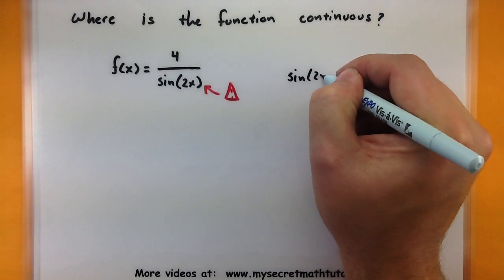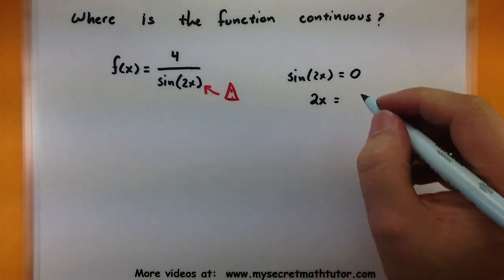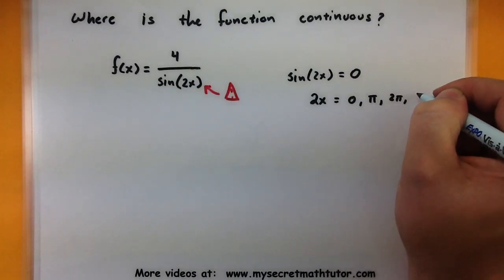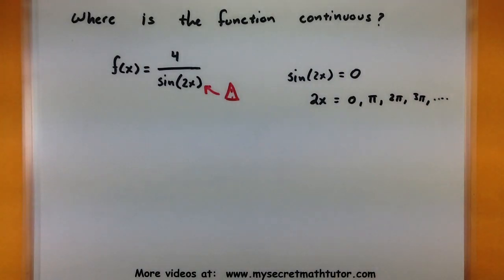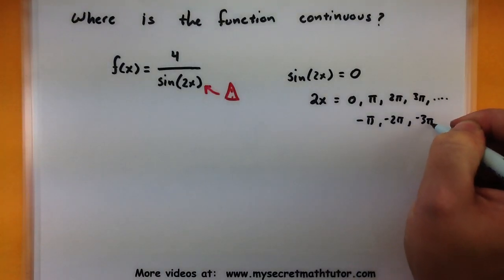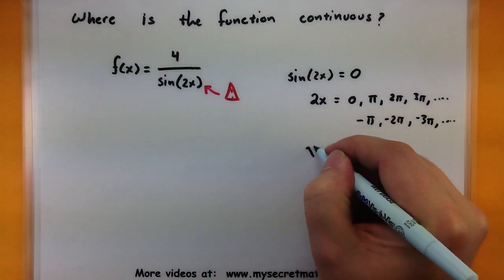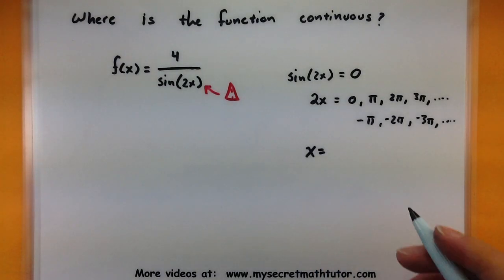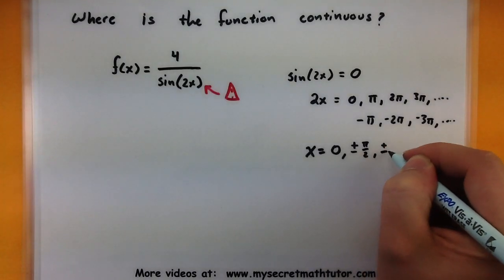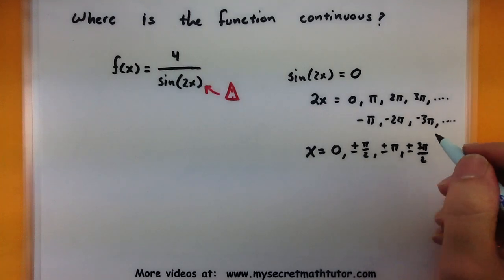So sine of two x, where does it equal zero? Well our angle on the inside could be a variety of different things. It could be zero, could be pi, could be two pi, could be three pi, and all the way down the line. You could also start including some negative angles like negative pi, negative two pi, and negative three pi, and all the way down the line. So if that's what the angle would be a problem, we can divide everything by two and see the specific angles that will be a problem in our function. So zero over two would be zero. Then we have plus minus pi over two, plus minus pi, plus minus three pi over two, and all the way down the line.